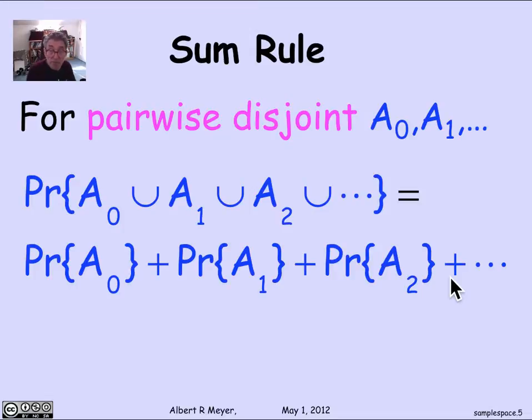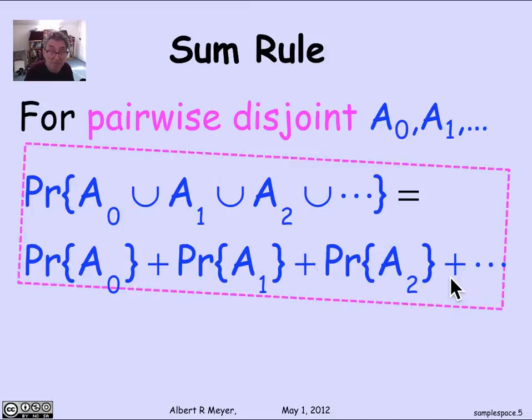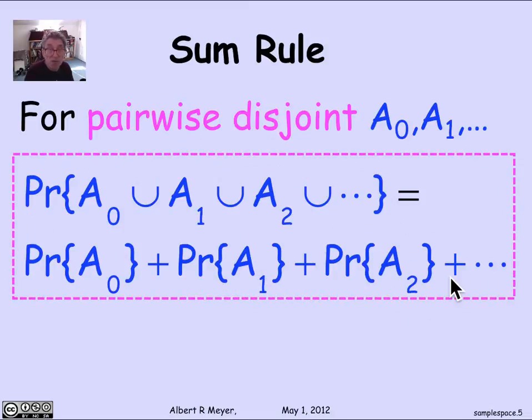In some approaches to probability, more general ones, this is actually taken as an axiom. It's the axiom that defines a probability space where you start with an assignment of probabilities to events. But in the discrete case, we don't have to worry about that. It's a corollary of the way we define the probability. That, of course, is a crucial rule, the sum rule. Sometimes it's called the countable sum rule, but we're just going to call it the sum rule.